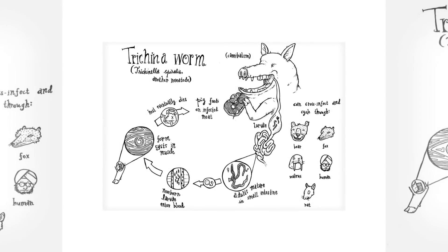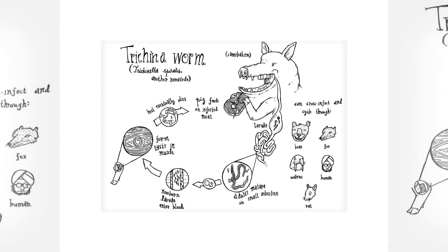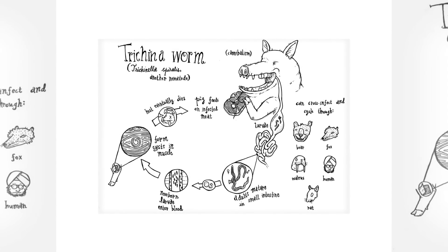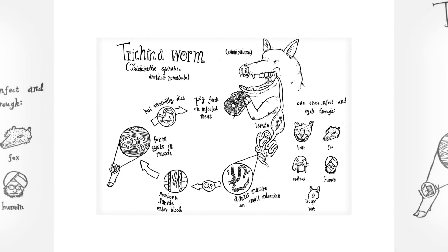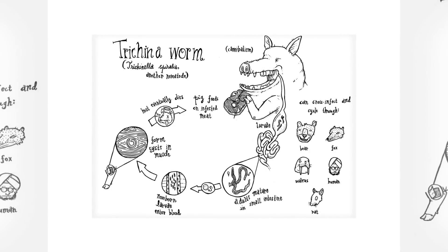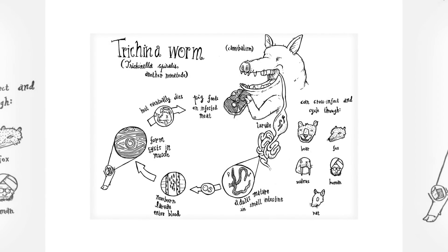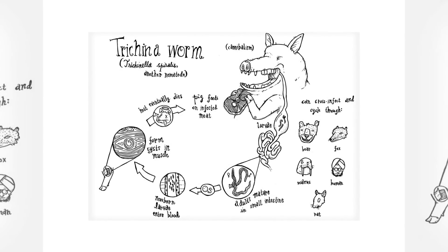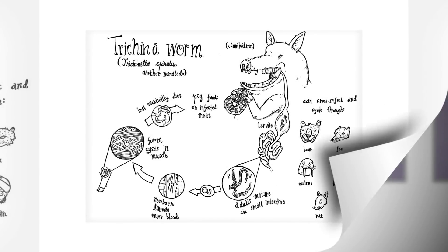After a host swallows the cysts, stomach acid dissolves the sac and releases the larvae into the body. Eventually they circulate into the blood and burrow into muscles and brain tissue. Severe complications from the parasite can include heart tissue inflammation and life-threatening arrhythmia, or irregular heartbeat. The migration of adult worms in the intestinal epithelium can cause traumatic damage to the host tissue, and the waste products they excrete can provoke an immunological reaction. The first symptoms may appear between 12 hours and 2 days after ingestion of infected meat.